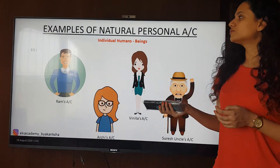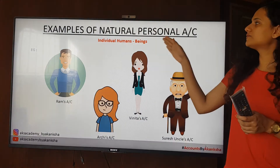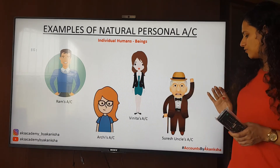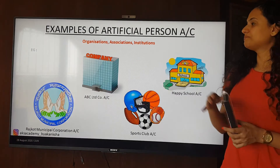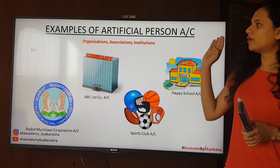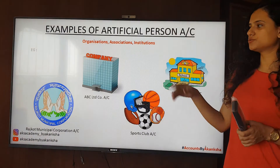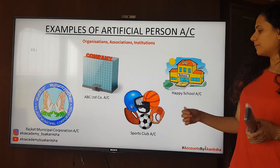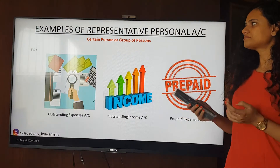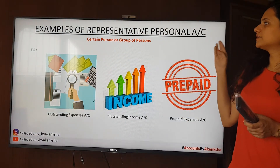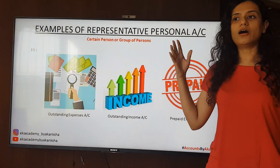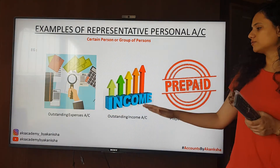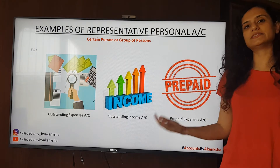Now let's see the examples. Examples of natural personal accounts — individual human beings: Ram's account, Vanita's account, Archie's account, Suresh uncle's account. Examples of artificial personal account — organizations, associations and institutions: ABC Limited company account, Rajkot Municipal Corporation account, sports club account, happy school account, etc. Examples of representative personal account — a group of persons: outstanding expenses account, outstanding income account, and prepaid expenses account.